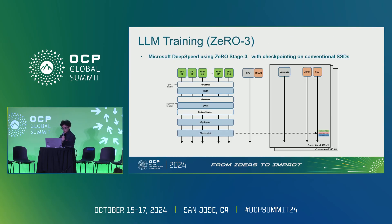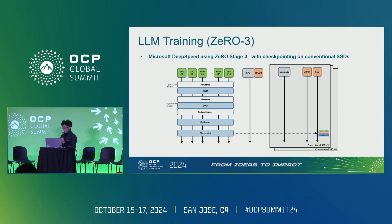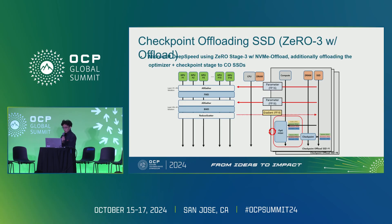We used Microsoft DeepSpeed as the baseline system for conventional training with checkpointing on a normal SSD — all computation including forward, backward, and optimizer stages performed on GPUs, with checkpointing writing the 32-bit parameters, momentum, and variance from GPU to SSD. To implement checkpoint offloading, we modified the DeepSpeed library by enabling the NVMe offload feature and moving the optimizer and checkpoint stages away from the GPU to run on the SSD.